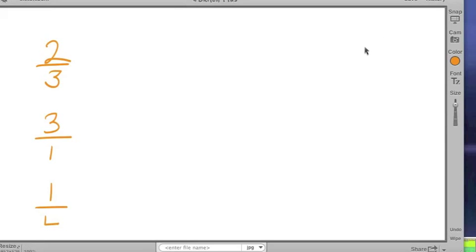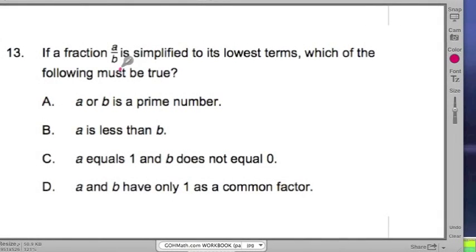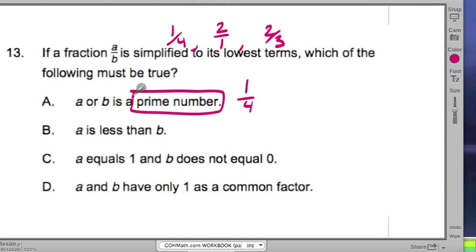Now let's go back. Let's look at that problem. If a fraction a over b is simplified to its lowest terms, and in your mind you're going to be like 1/4 or 2 over 1 or 2/3rds, which of the following must be true? A: a or b is a prime number. Well, that works for 2/3rds, right, but it doesn't work for 1/4th because 1/4th is an example where a over b, both a and b are not prime numbers. What makes up a prime number, by the way? Prime numbers are numbers like 2, 3, 5. These are numbers that only have 2 factors: 1 and themselves.